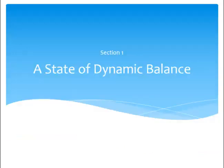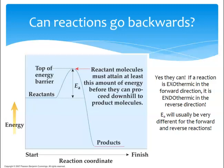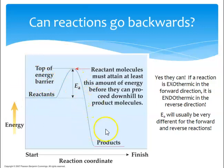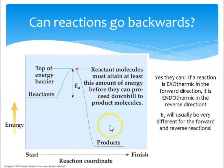So what the heck is equilibrium? Can a reaction go backwards? Yes, it can. We can have a reaction go backwards — as long as all the products are still around, a reaction could possibly be reversed. So if we have a reaction that is exothermic in the forward direction, then it's going to be endothermic going in the reverse direction. The big difference is that activation energy is going to be very different for the forward and reverse reactions, and because the activation energy is different, the rates of those reactions will be very, very different.